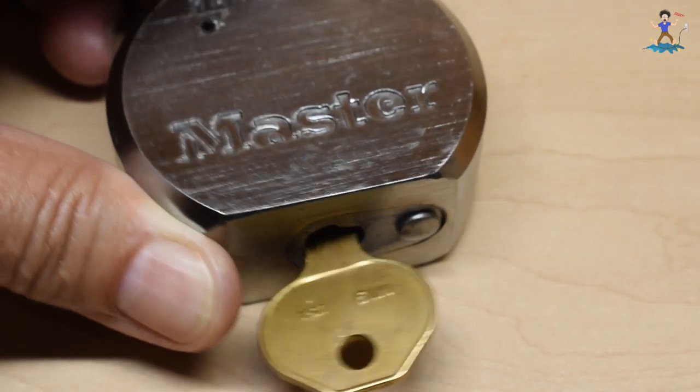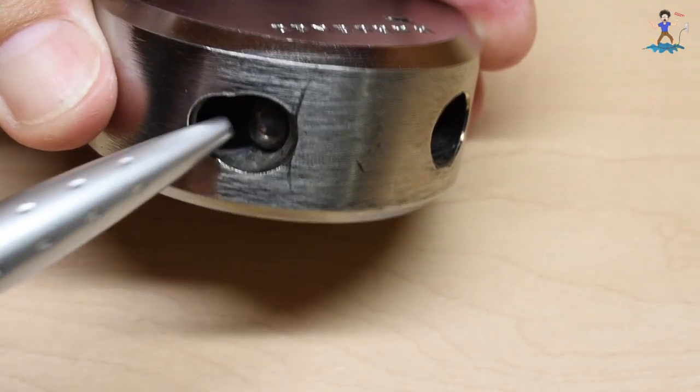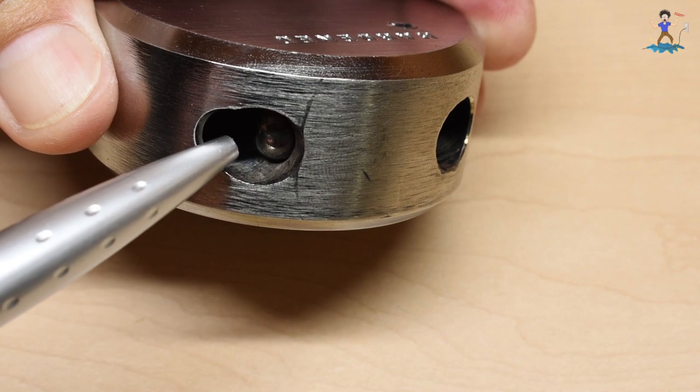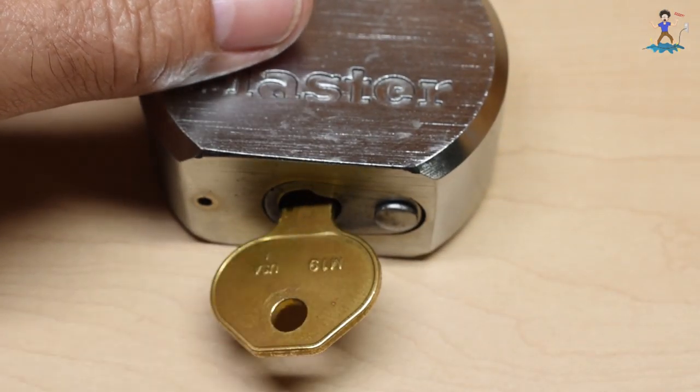Let me open this up. Very simple, just go to this side and way down in here there's a hex socket screw. We're going to insert a hex key and unscrew it and then remove this plate and we're going to take a look at the lock core.